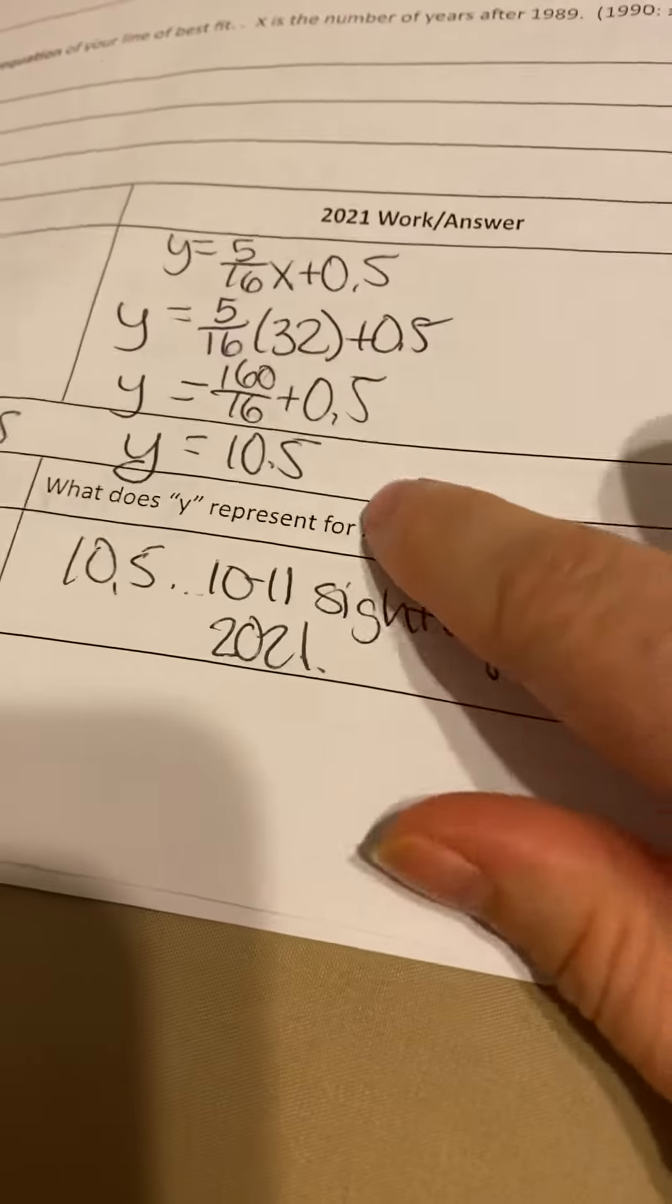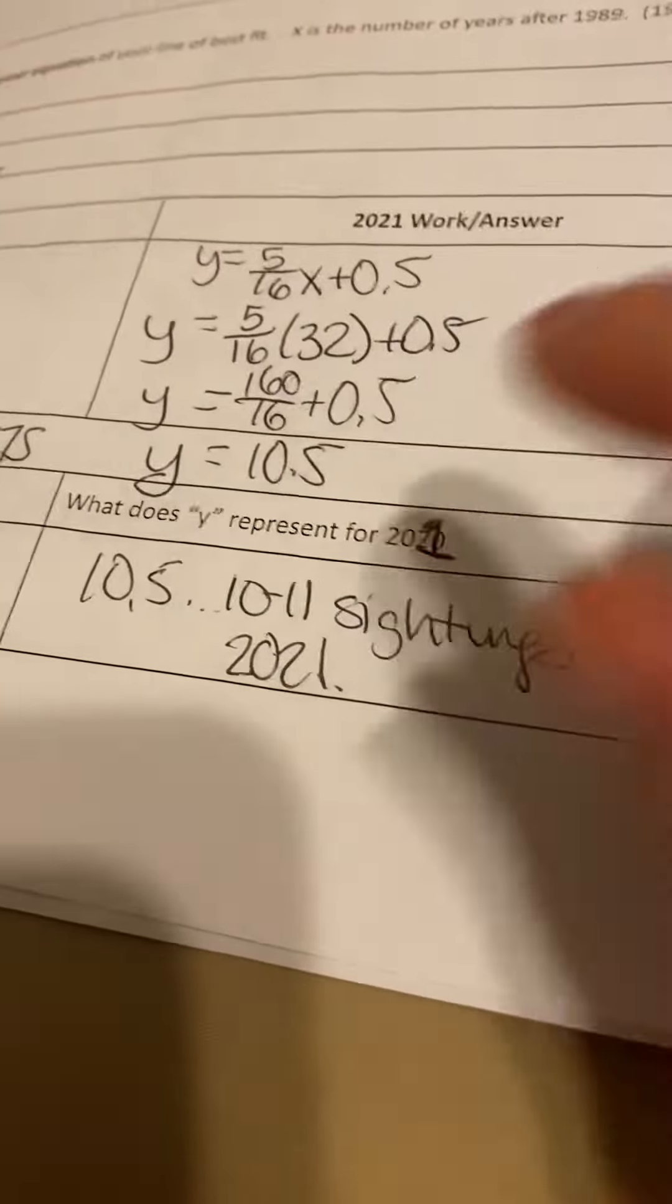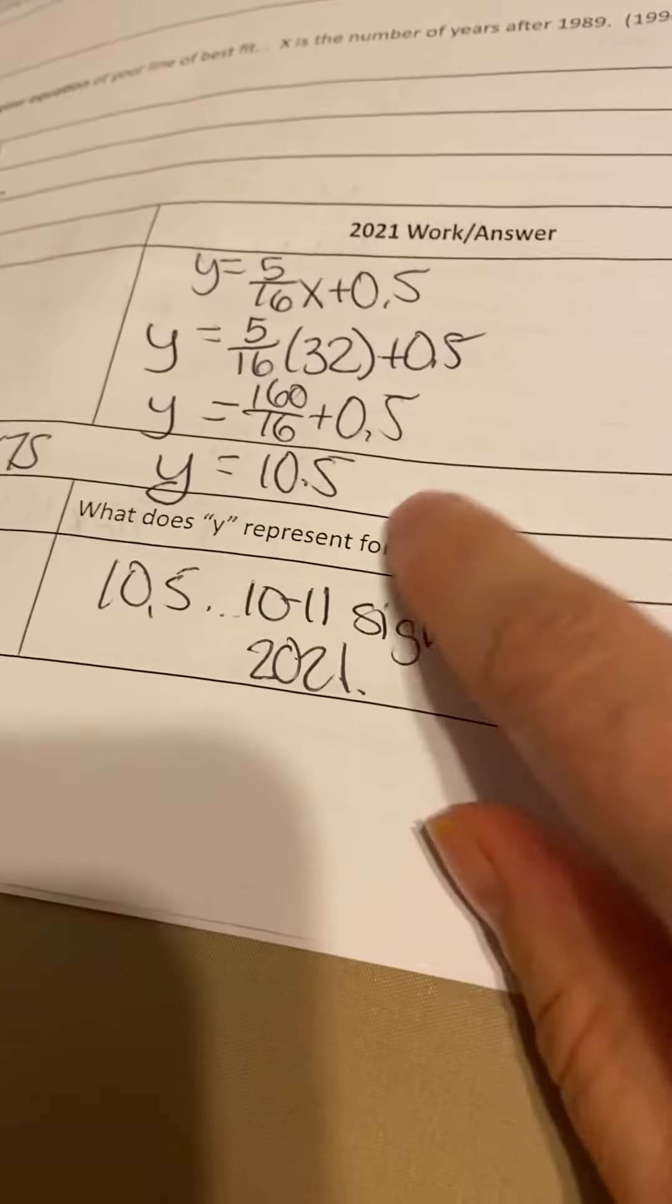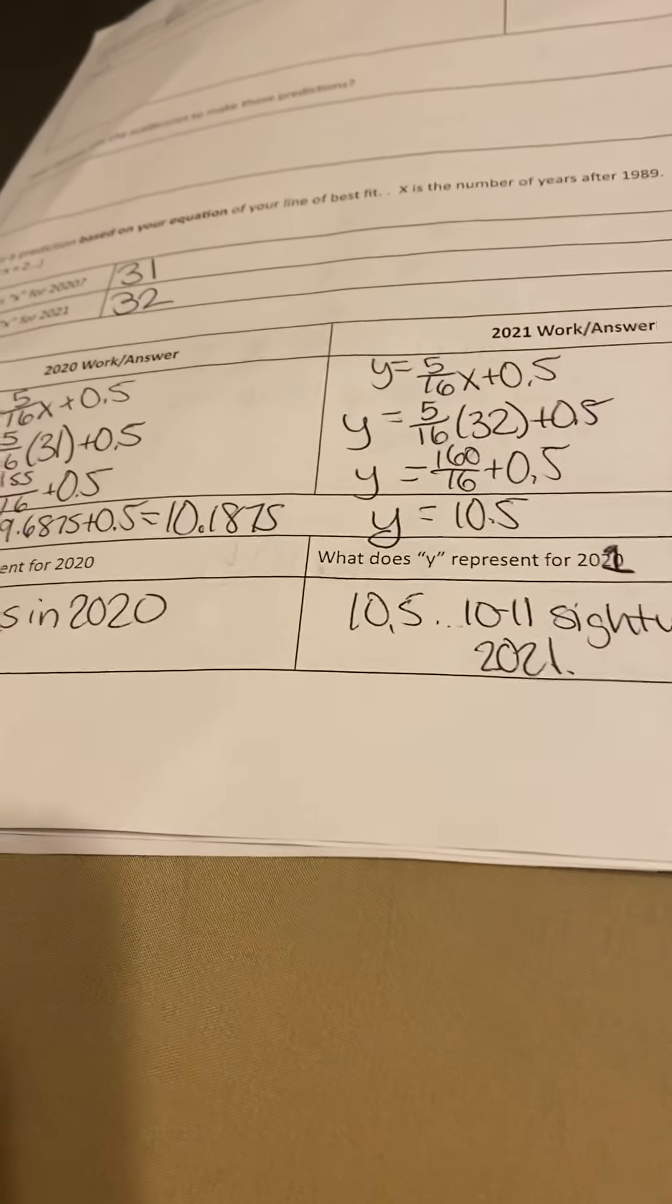Same thing here. Really, it's 10.5. So use 10. Maybe you could round up to 11 sightings in 2021. And I did have a typo there. So please fix that to a 1. And so that is how you can use equations to come up with your predictions.